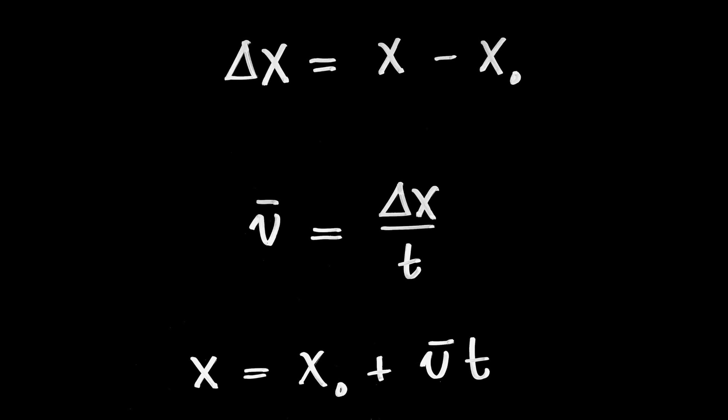Velocity is the displacement divided by the time it takes the displacement to happen. Because it's defined in terms of displacement, which is a vector, velocity is also a vector. Positive velocity means traveling in the positive direction; negative velocity means traveling in the negative direction. Velocity is measured in meters per second. I did a bit of algebra to create a more useful form: the final position equals the initial position plus the average velocity multiplied by time. That's the same equation — just written differently.